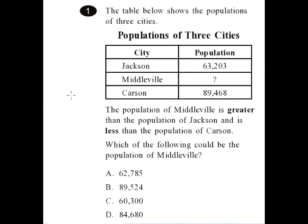Problem number one. The table below shows the population of three cities: Jackson, Middleville, and Carson. The population of Middleville is greater than the population of Jackson and less than the population of Carson. Which of the following could be the population of Middleville?